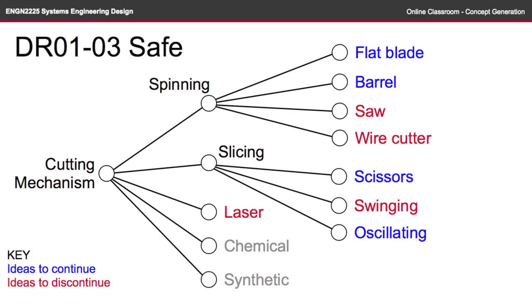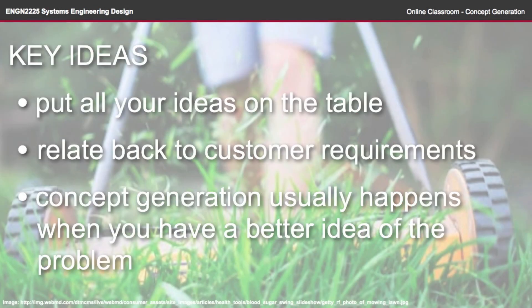If you look at the safety requirement, the flat blade, barrel, scissors, and oscillating might be better options. The saw, wire cutter, swinging, and laser might not be safe. Though this also brings in some ideas around what I've seen in previous products — the flat blade is not necessarily safe if it doesn't have a hard shell around it, so perhaps I'm bringing some bias into that observation. So that really wraps up the key ideas for concept generation. The classification tree is a really useful process to go through. Remember when brainstorming to put all of your ideas on the table, because you don't want to leave out something that could make a big difference to your product. You should relate back to the customer requirements, and in this process it might be a bit difficult because concept generation usually happens when you have a much better idea of the problem. Make sure you check out the reading for this topic — it goes through concept generation for an owl gun — and don't forget to do the self-test. Thanks for listening.